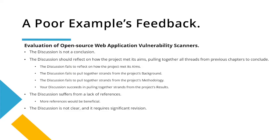Rather than a full discussion chapter or a vague excerpt, I'm going to use an example feedback section to spark this discussion. Here's our poor example's feedback concerning a web app scanner evaluation project. From the first point, this example makes the classical error of confusing the discussion with a more traditional conclusion chapter. They are very different and perform different jobs — the discussion still contains new content, while the conclusion doesn't. That's the easiest way to distinguish them. Don't make this same mistake.